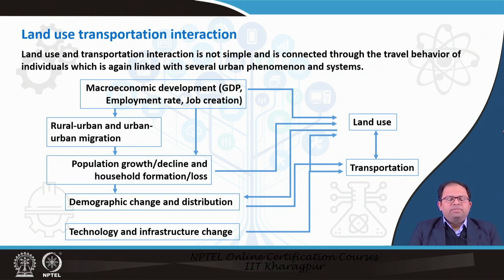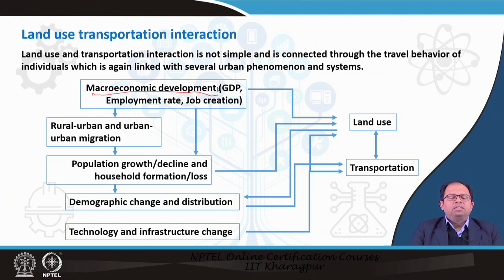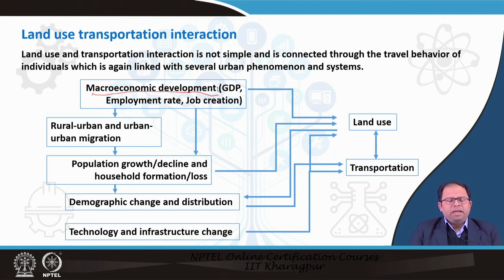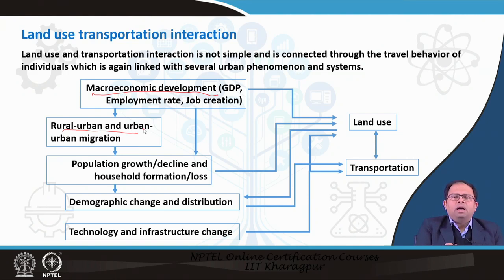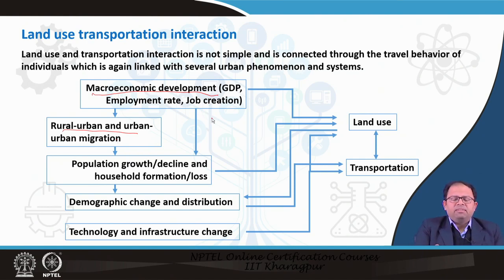If you look at the slide, the first box on the screen is macroeconomic development, which includes GDP, change in GDP, change in employment rate, and change in job creation. Change in the macroeconomic environment leads to change in the number of jobs, change in the number of people employed, and general growth or prosperity of that particular urban region. Macroeconomic development also influences migration from rural to urban areas, and directly influences population growth, decline, and household formation.